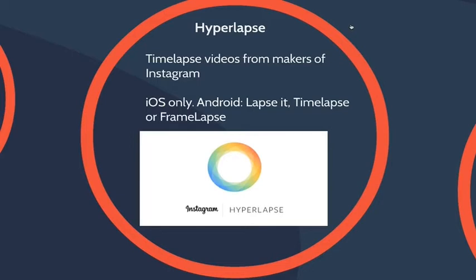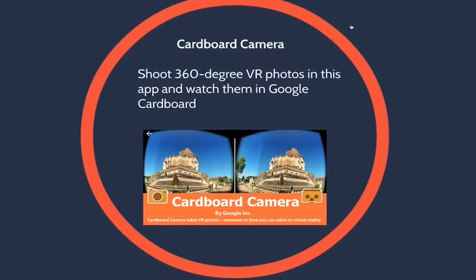Hyperlapse is another iOS tool built by Instagram that makes really nice time-lapse videos. Time-lapse is great if you're moving — on a train, skateboard, bicycle, or in a car — or you can stay in one place and record everything moving around you: traffic, people walking by. Hyperlapse is iOS only, but on Android, Lapse It, Time Lapse, and Frame Lapse do much the same thing. One key advantage Hyperlapse has is really good built-in stabilization, which smooths out your time-lapse video significantly.